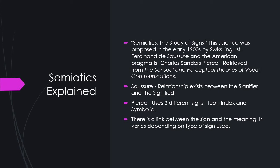Peirce's idea about semiotics distinguished between three types of signs: icon, index, and symbol. Whether a sign belongs in one category or another is dependent upon the nature of its relationship between the sign itself, which he called the referent, and the actual meaning. Hamilton 2021.